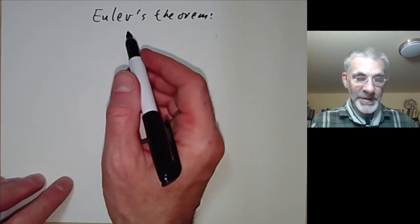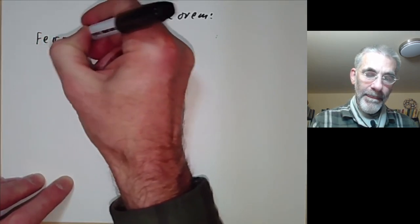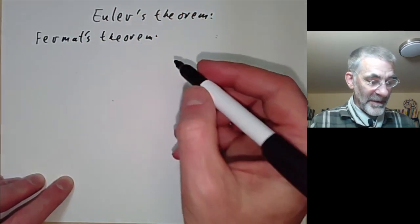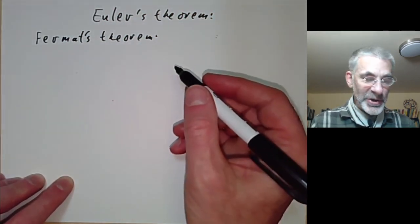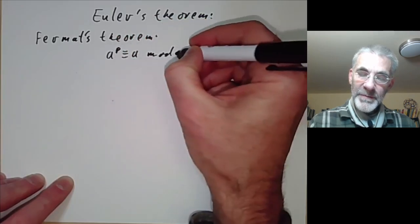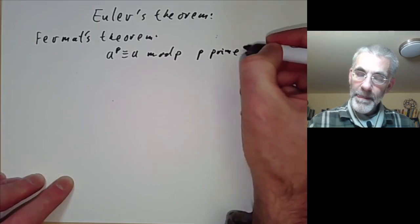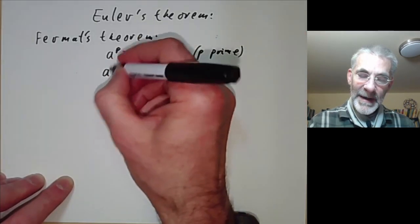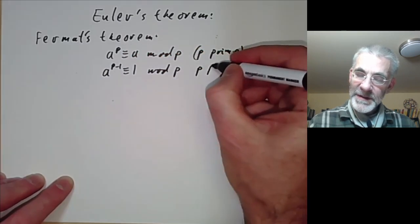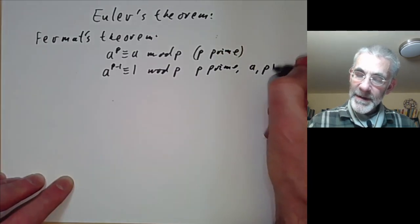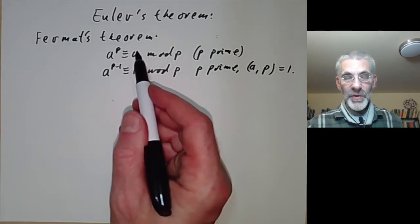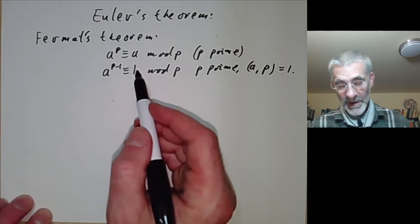Euler's theorem is a generalisation of Fermat's theorem. We remember from last lecture that Fermat's theorem has two forms: either a to the p is congruent to a mod p where p is prime, or a to the p minus one is congruent to one modulo p whenever p is prime and a is not divisible by p. Sometimes the first form is more convenient and sometimes the second form is more convenient.